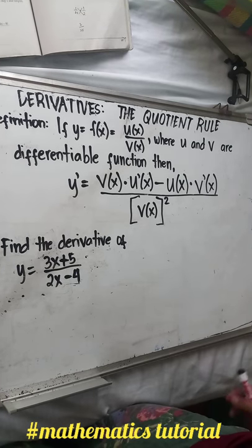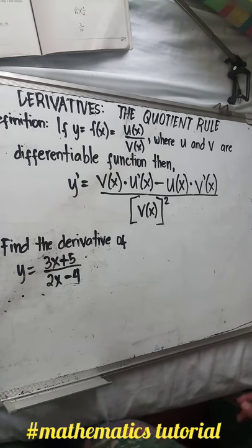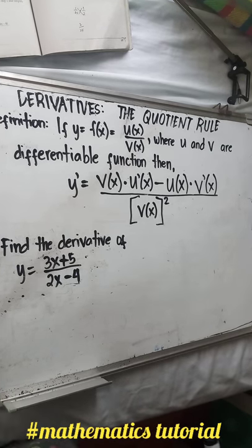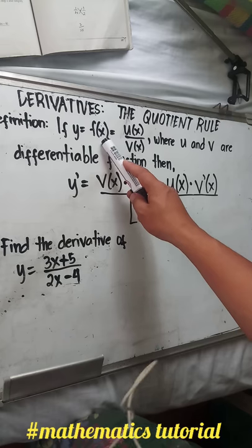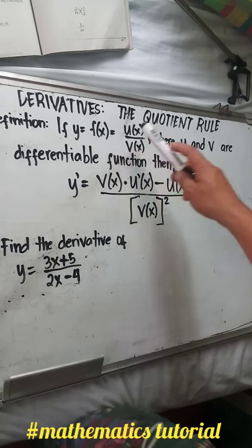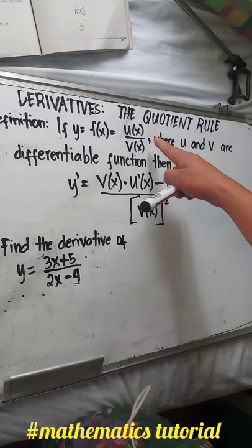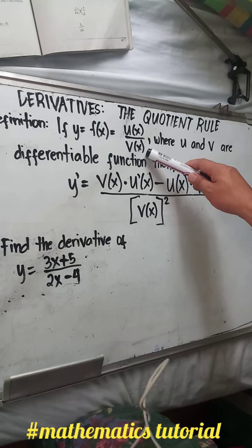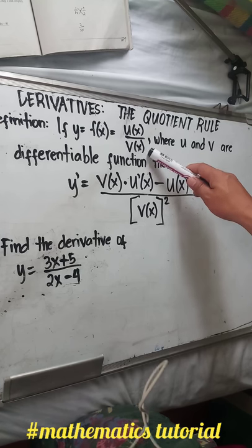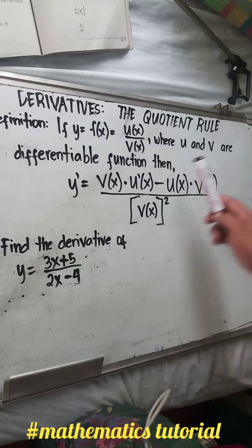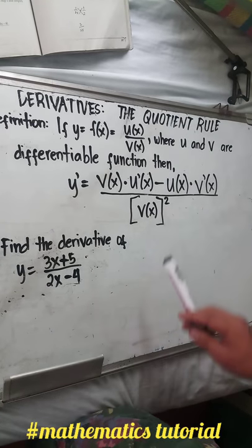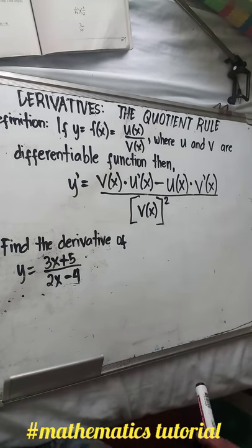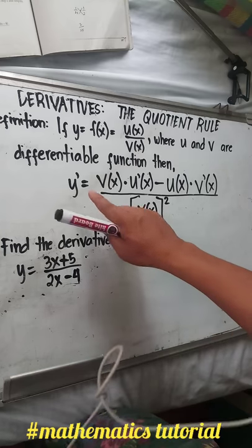Welcome to my channel. Today we will discuss derivatives using the quotient rule. Based on the definition, if y equals f of x, let the numerator equal u of x and let the denominator equal v of x, where u and v are differentiable functions. Then the derivative of the given function is: